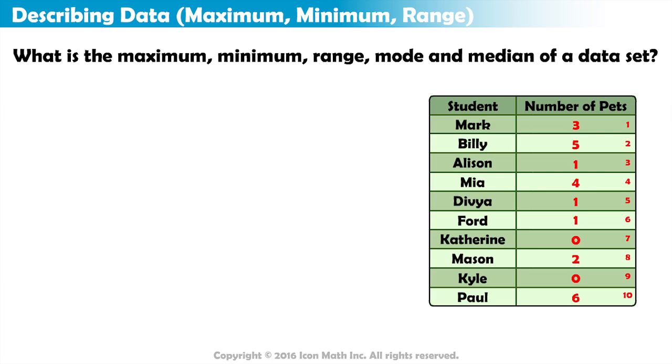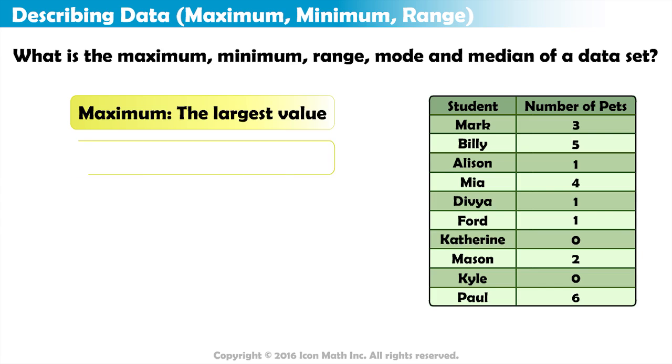Let's start by identifying the maximum and the minimum. The maximum is the largest observation or value in the data set. And the minimum is the smallest observation or value in the data set.